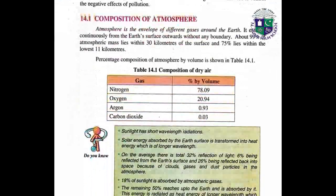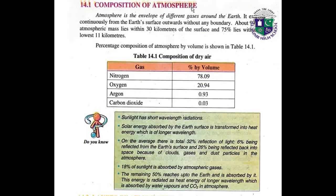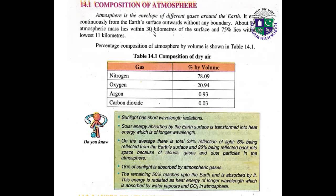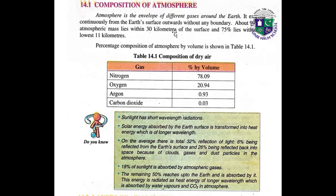Our first topic is the composition of atmosphere. What is atmosphere? Atmosphere is the envelope of different gases around the earth. It extends continuously from the earth's surface outwards without any boundary. About 99% of atmospheric mass lies within 30 kilometers of the surface, and 75% lies within the lowest 11 kilometers.